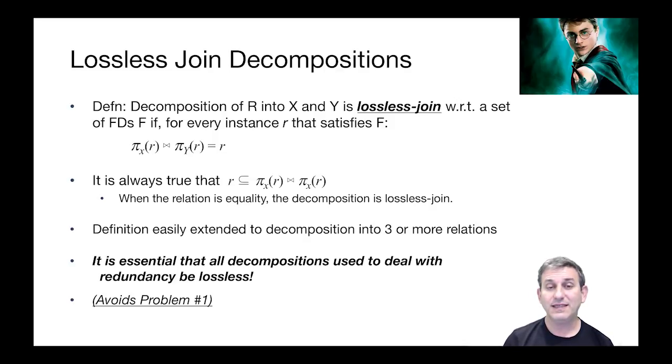You can take this definition and easily extend it to a decomposition for three or more relations. The main thing to keep in mind is it is essential that all the decompositions we're going to do for dealing with redundancy have to be lossless. We're not going to generate spurious values. We're always going to make sure that we can join up our tables and get back the original data.